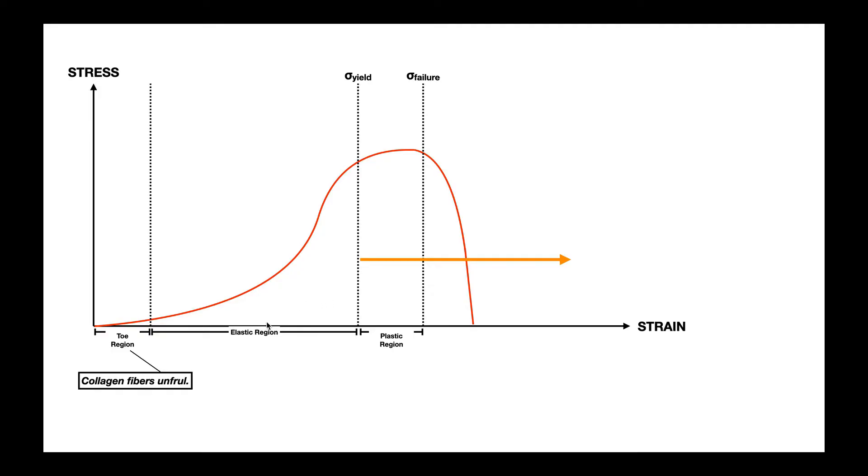And so we have four major regions of this stress strain curve. We have a toe region, an elastic region, a plastic region, and beyond that, this is where we actually have injury to the tendon and ligament.